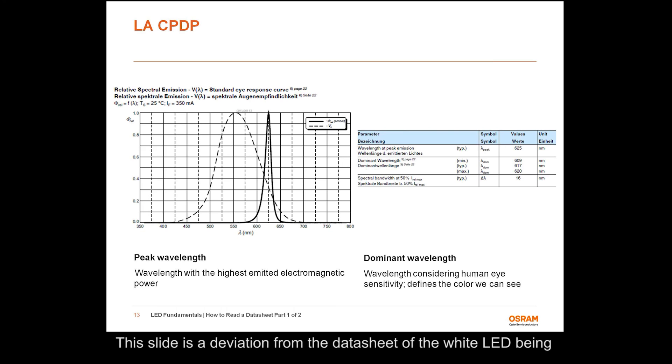This slide is a deviation from the datasheet of the white LED being discussed to a monochromatic LED datasheet to illustrate a few key parameters mentioned in a monochromatic LED datasheet. Monochromatic LEDs specify peak wavelength, dominant wavelength, and spectral bandwidth. Dominant wavelength is the single wavelength that is perceived by the human eye and is defined as the wavelength of monochromatic light that has the same apparent color as the light source.